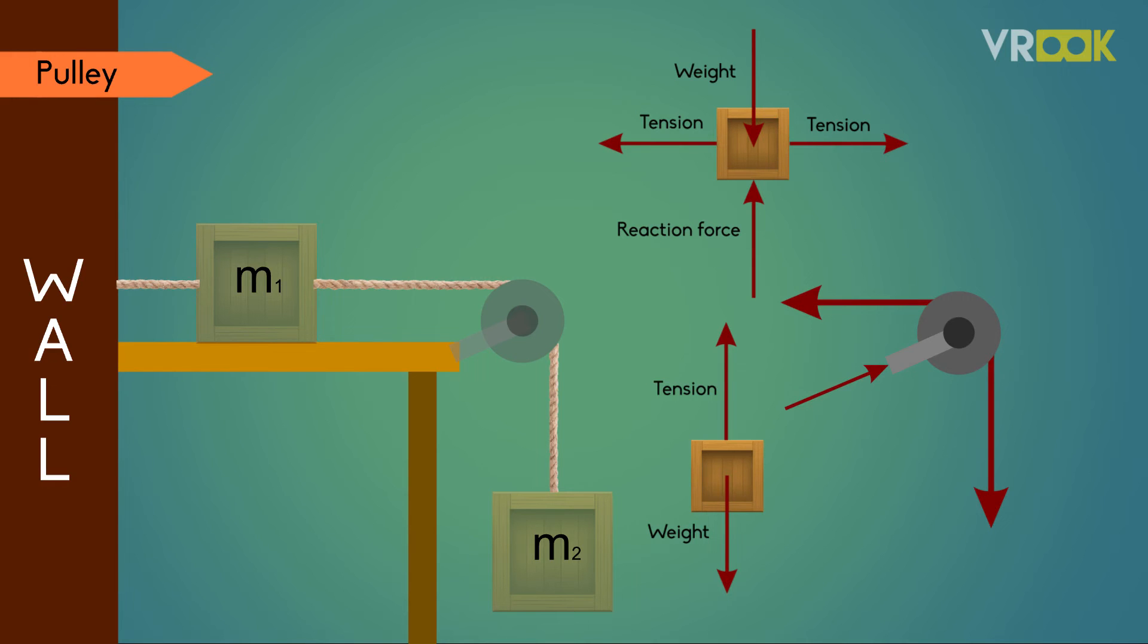So there are two strings which exert some force on the pulley. We will write these tensions in the direction they act. This is the FBD of the pulley.